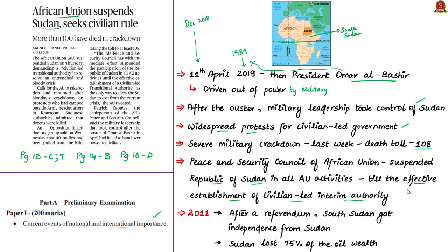An interim government will take care for the time being and will take steps for a fair election for the formation of a fully democratic government. Only in 2011 did South Sudan gain independence from the Republic of Sudan after a referendum, causing Sudan to lose around 70% of its oil wealth, with serious financial ramifications. Sudan was also facing U.S. sanctions. The drop in oil revenue was mishandled, leading to higher cost of living and inflation — almost 70% in November 2018 — which aroused public anger and led to protests and democratic actions since December 2018.